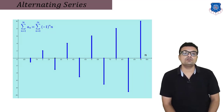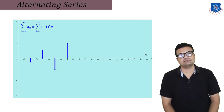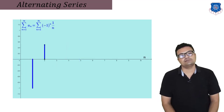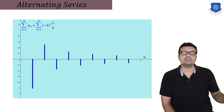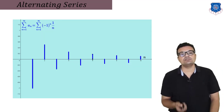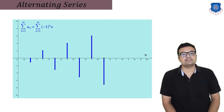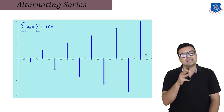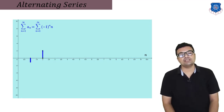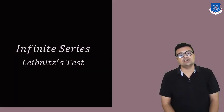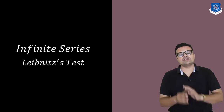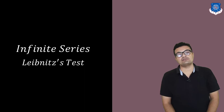Graphically, the series converges when both the positive and negative term sequences decrease toward zero. However, if the positive terms increase toward infinity and the negative terms also increase toward infinity, we have a case of divergence. That was the graphical approach to understanding convergence and divergence for alternating series.